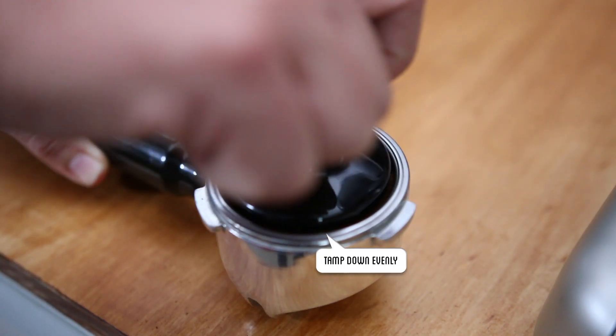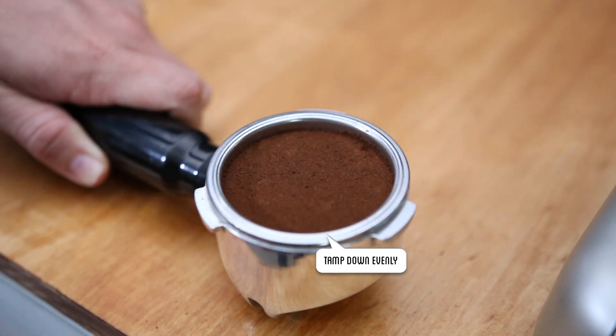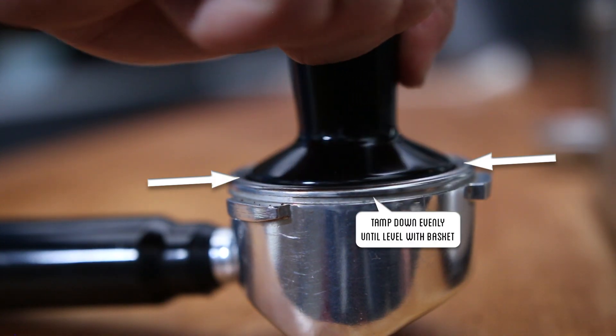Press down with your tamper and the edge of your tamper should be level with the top of your filter basket.